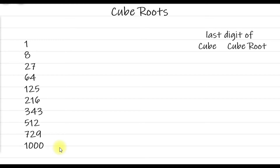I have written 10 cubes in front of you. Just like squares, there is a property for cubes depending on the units digit. So: 1³ = 1, 2³ = 8, 3³ = 27, 4³ = 64, 5³ = 125, 6³ = 216, 7³ = 343, 8³ = 512, 9³ = 729, and 10³ = 1000.